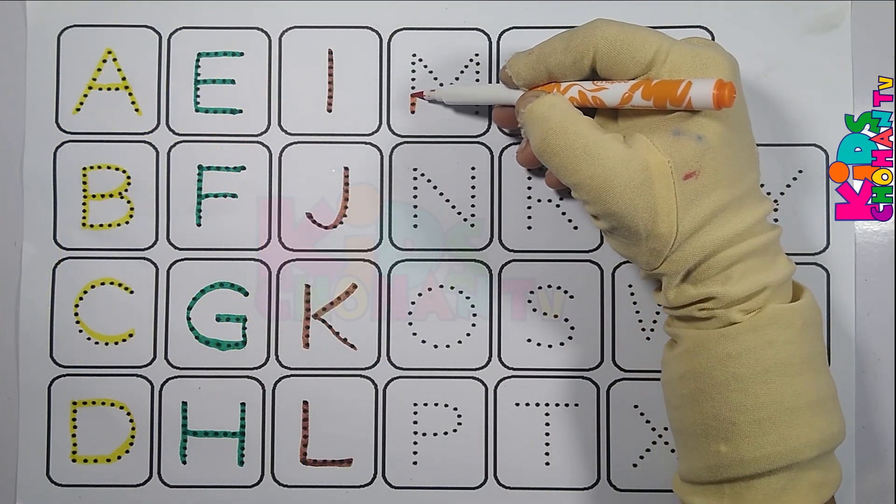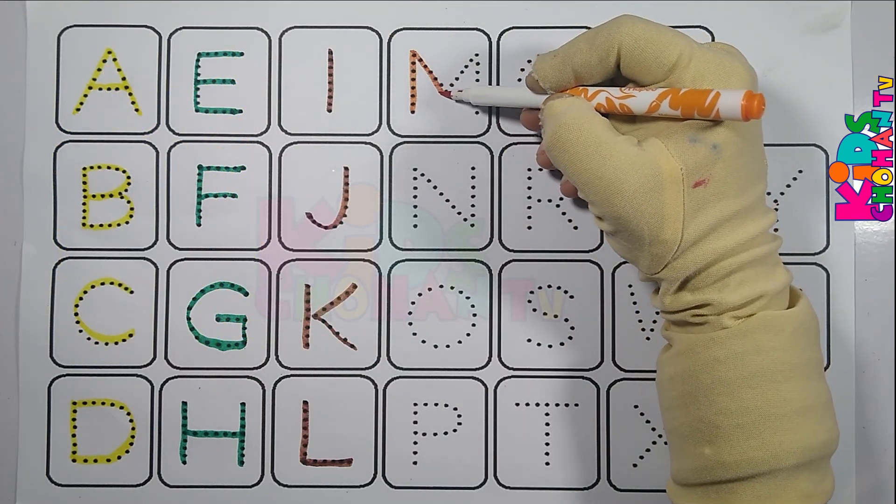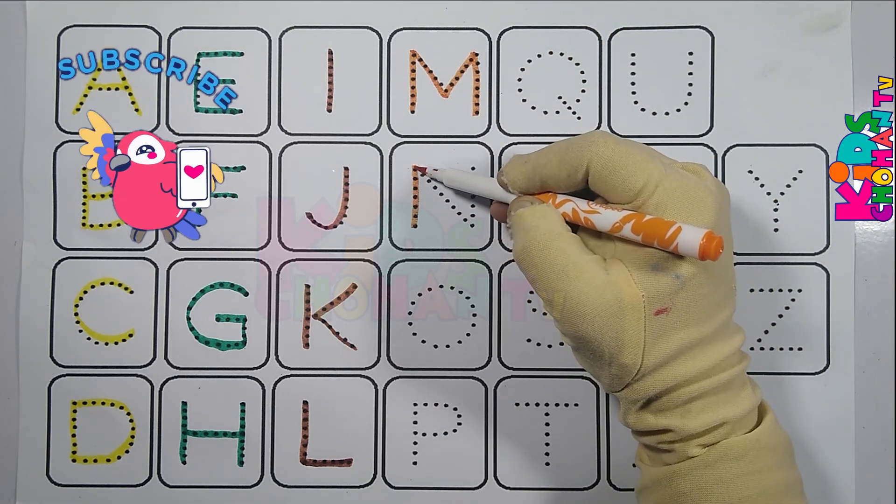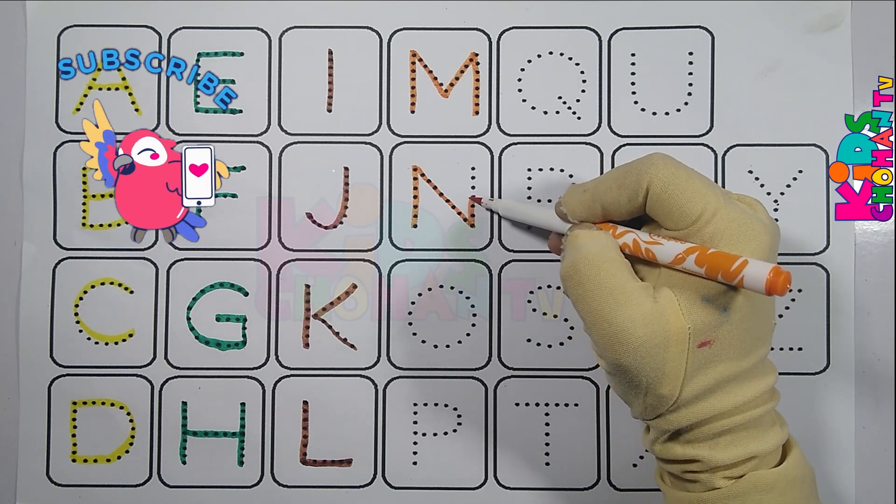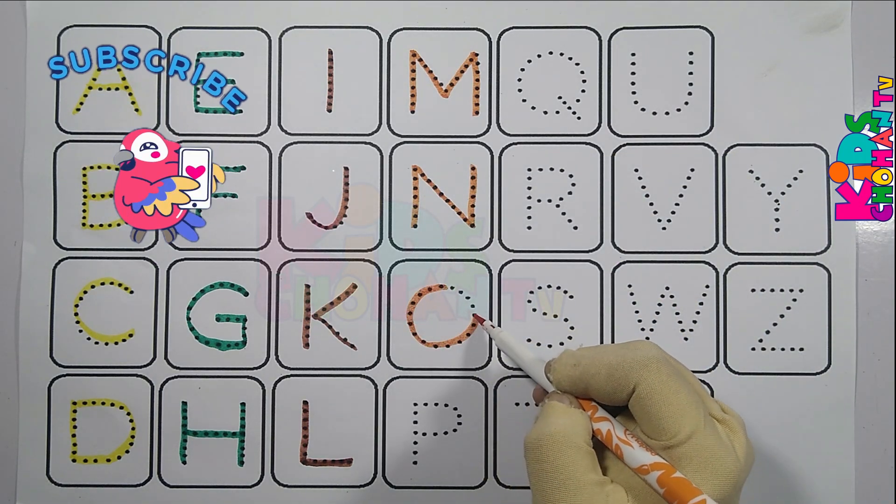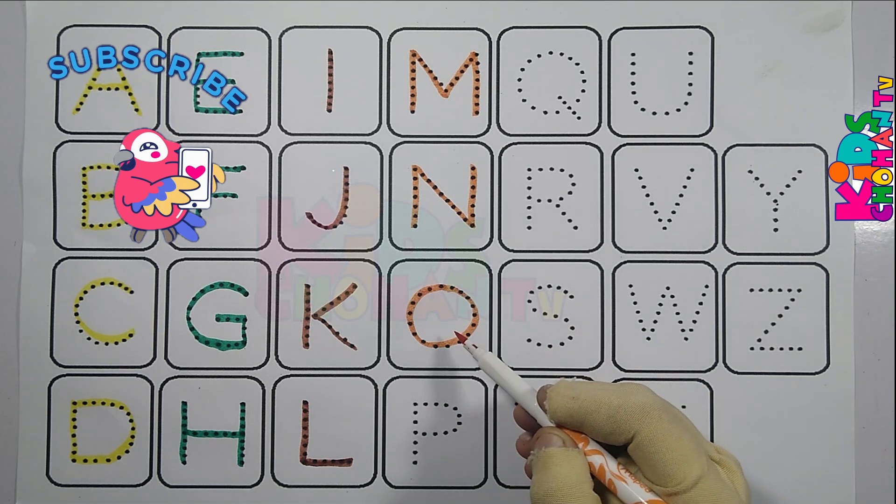M, M for monkey. W, X, Y, and Z. N, O for nest. O, O for always.